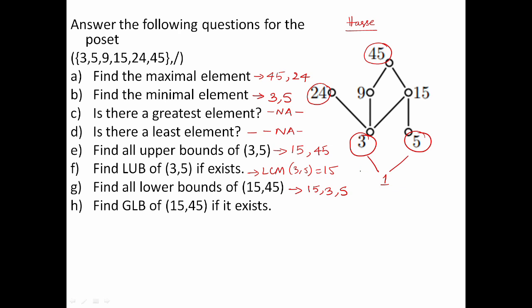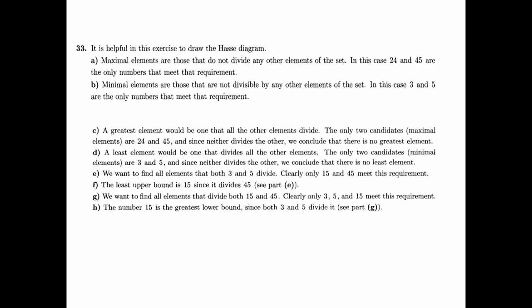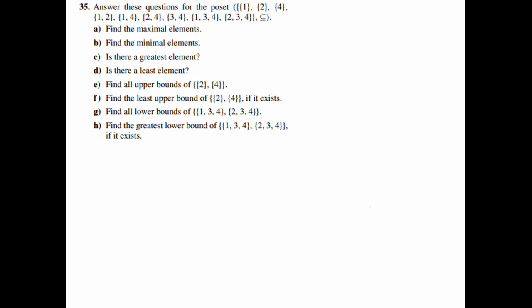So 15 and 45 are all lower bounds - 15 and 3 and 5. Next, find the GLB, Greatest Lower Bound, of 15 and 45. Greatest Lower Bound is HCF. So HCF of 15 and 45 - this is the highest common factor of 15. If you look at this question, you refer to this answer.